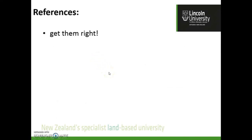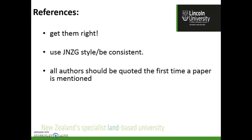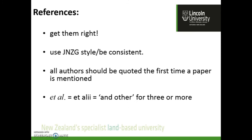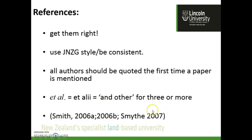References need to be done properly. Use EndNote if you're unsure, and use the Journal of New Zealand Grasslands Association style if you're unsure of formatting. Getting references right — both in the text and at the end — is very important. People need to be able to find the literature you're quoting. All authors should be quoted the first time a paper is mentioned, up to about three or four authors. Beyond that, use 'et al.' — 'Moot et al.' means Moot and others. It's written with a full stop because 'al' is an abbreviation of 'alii.' In the text, Smith 2006a comes before 2006b, and Smith comes before Smiley.